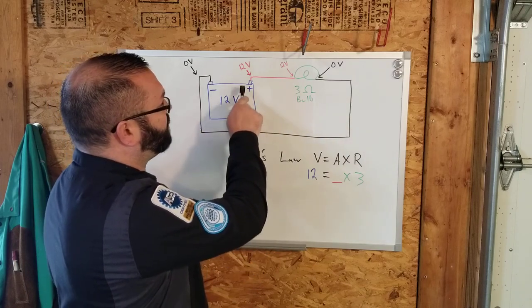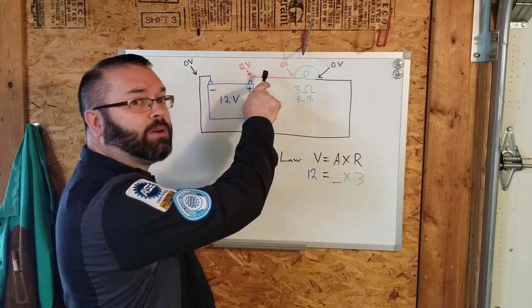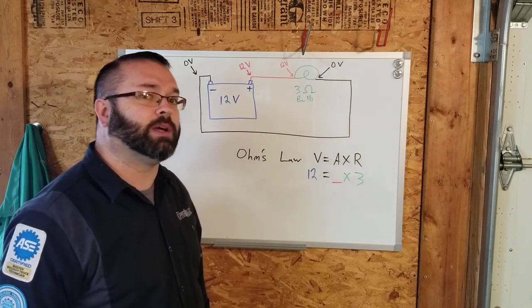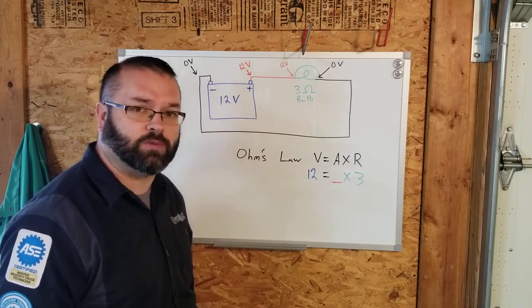You'll notice as we start out, we have 12 volts going along. So remember, this is like our pressure. We have 12 volts up to the bulb, our pressure goes away. The light bulb uses those volts up.